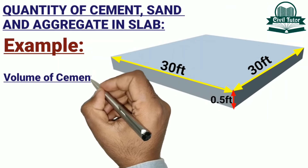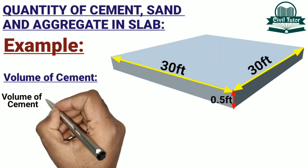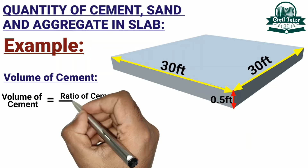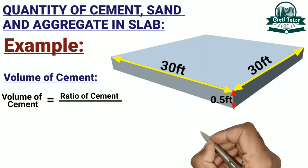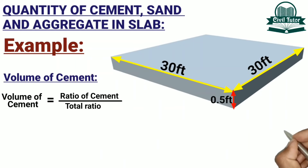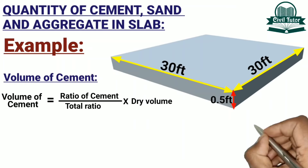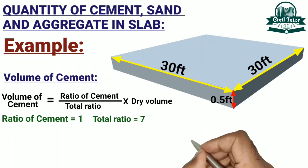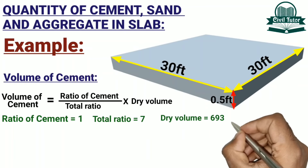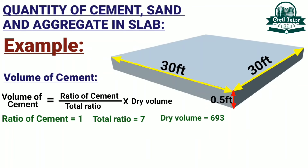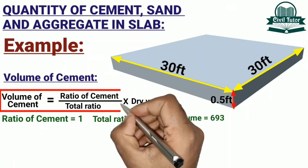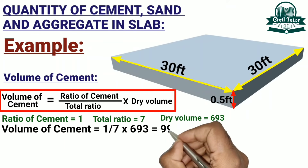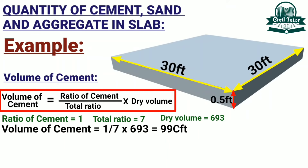To calculate the volume of cement, the formula used is: ratio of cement divided by total ratio, multiplied by dry volume of slab. The ratio of cement is 1, the total ratio is 7, and the dry volume is 693 cubic feet. Substituting these values, we get the volume of cement equal to 99 cubic feet.